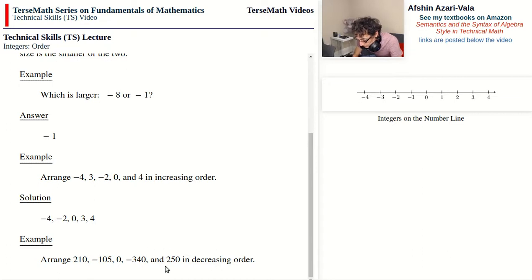The largest number in the set is 250, followed by 210, and then 0. So far it's not that difficult. Keep in mind that on the negative side, the number that has a smaller size is the larger of the two, and the one that has a larger size is the smaller of the two. And therefore negative 105 is larger than negative 340, and the solution to the problem becomes 250,